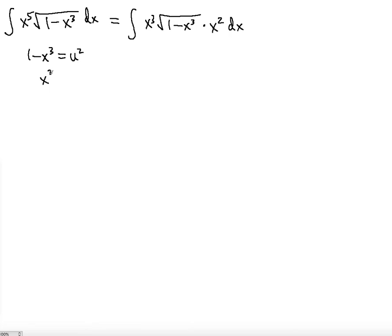So notice that x to the third, if you solve for it, you're going to get 1 minus u squared. If you take the derivative on both sides, if you differentiate both sides, you will get 3x squared dx is equal to negative 2u du.